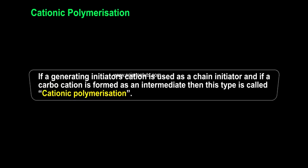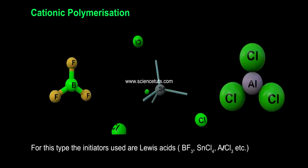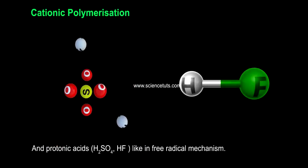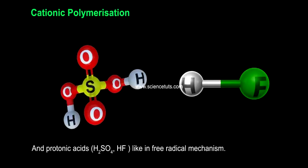Cationic polymerization: If a cation generating initiator is used as a chain initiator and a carbocation is formed as an intermediate, then this type is called cationic polymerization. The initiators used are Lewis acids such as BF₃, SnCl₄, AlCl₃, etc.